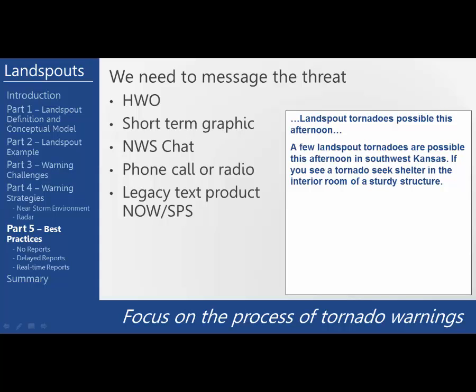A preemptive landspout message using a short-term forecast or special weather statement might say something like: 'Landspout tornadoes possible this afternoon' as the headline. And below: 'A few tornadoes are possible this afternoon in southwest Kansas. If you see a tornado, seek shelter in the interior room of a sturdy structure.' We want to keep the message clean and simple and encourage people to take the safest action.